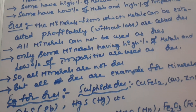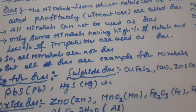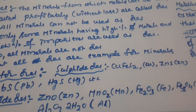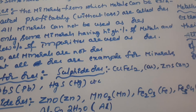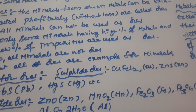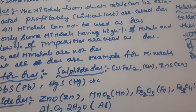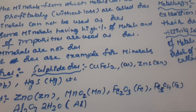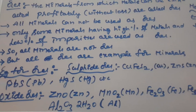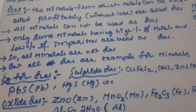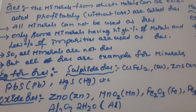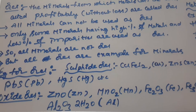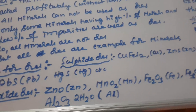Some examples of ores: Sulfide ores — copper pyrite (CuFeS₂) is the ore of copper; zinc blende (ZnS) is the ore of zinc; galena (PbS) is the ore of lead; cinnabar (HgS) is the ore of mercury. Oxide ores include ZnO, MnO₂, Fe₂O₃ (hematite), Fe₃O₄ (magnetite), and bauxite (Al₂O₃·2H₂O).